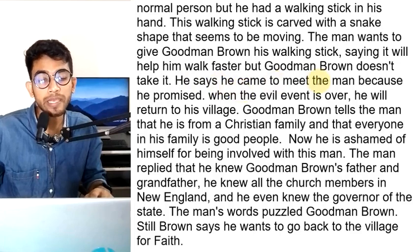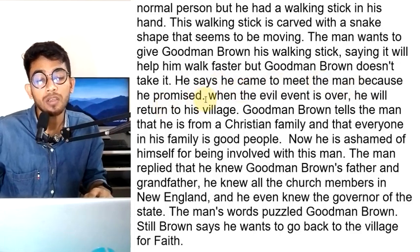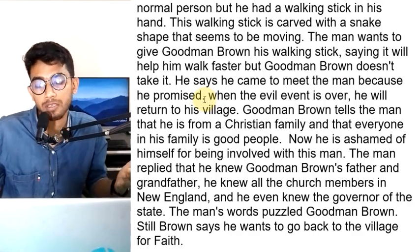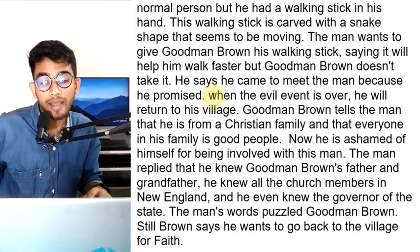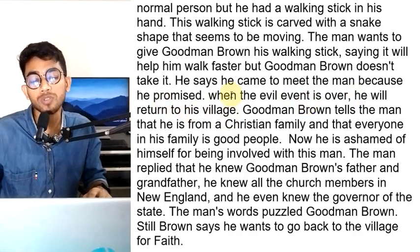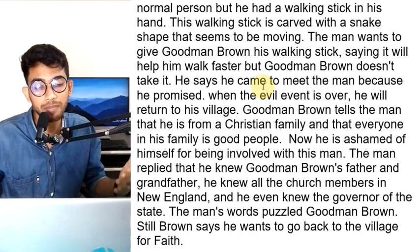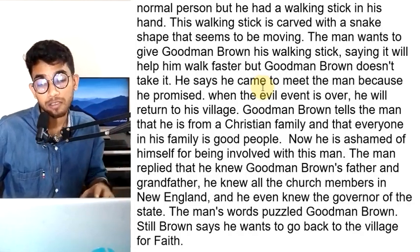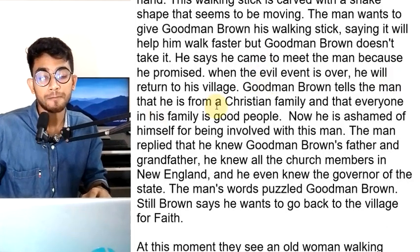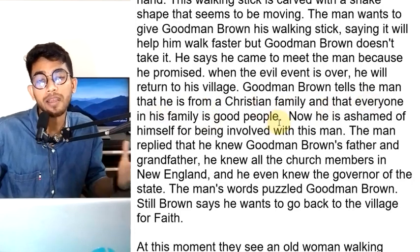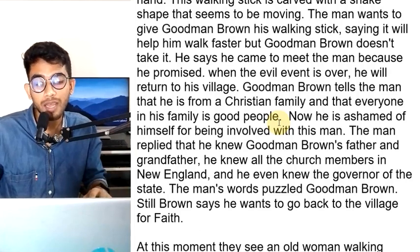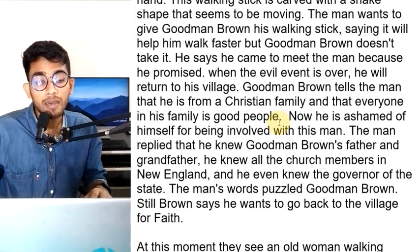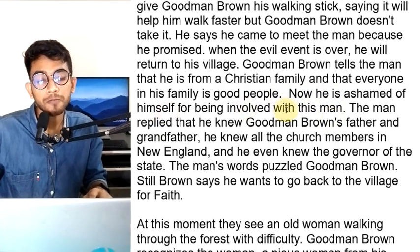The man wants to give Goodman Brown his walking stick, saying it will help him walk faster, but Goodman Brown doesn't take it. Brown says he came to meet the man because he had promised, but says that when the evil event is over he will return to his village. Goodman Brown tells the man that he is from a Christian family and that everyone in his family is good people.